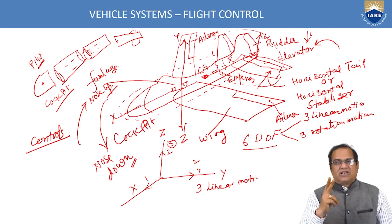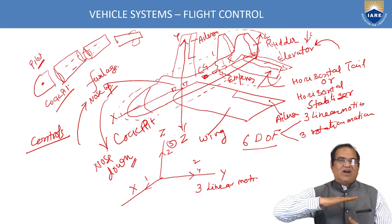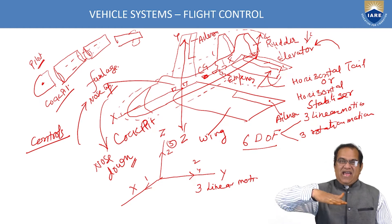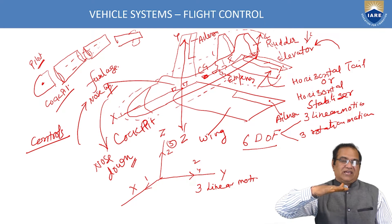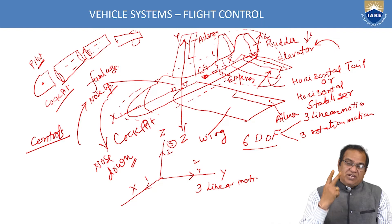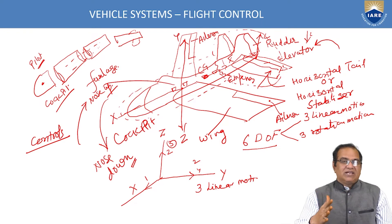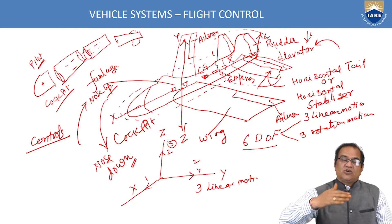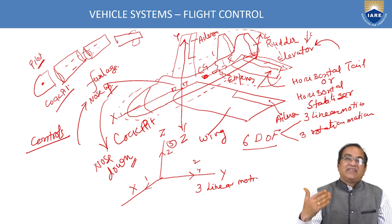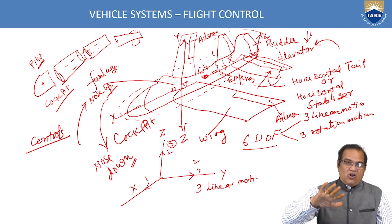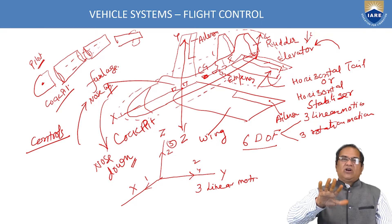Longitudinal motion consists of two linear motions (in x and z) and one rotation (pitch). The other three motions — lateral — include linear motion in the y direction, rolling with respect to the x-axis, and yawing with respect to the z-axis. If the aircraft drifts right, it is positive linear motion; left is negative. If the nose goes right, that is positive yaw; left is negative. When the right wing goes down, that is positive roll; left wing down is negative roll.